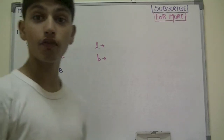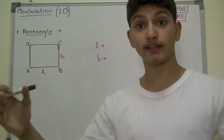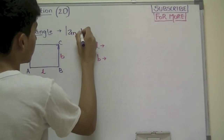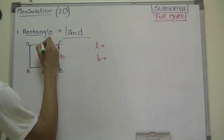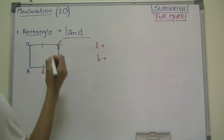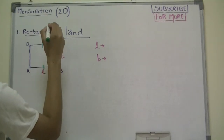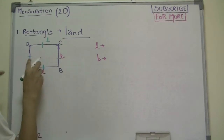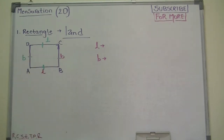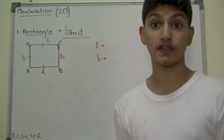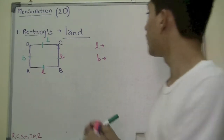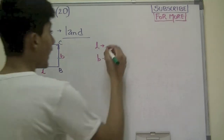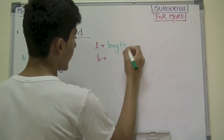You can think of a rectangle as a certain type of rectangular land. Now a rectangle pretty much looks like this. The interesting fact is that this side and this side are always equal, so we name them L. These two sides are equal, and let's name them B. Now that you know opposite sides are equal — this is equal to this, and this is equal to this — L represents length and B represents breadth.